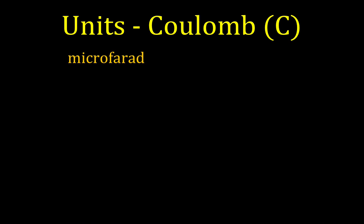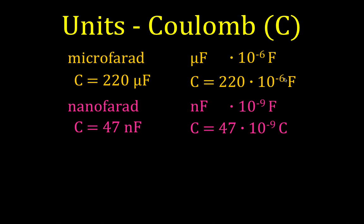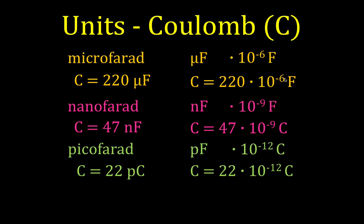Most of the time capacitance is less than a Farad. We can have a microfarad capacitor — microfarad is abbreviated with the Greek letter mu (µ), and microfarad is 10 to the minus 6. For example, a capacitance of 220 microfarads can also be written as 220 times 10 to the minus 6 Farads — these two values are equivalent. We could also have nanofarads, which is 10 to the minus 9, and picofarads. Micro is the most common, but you'll also see nanos and picofarads in calculations or problems.